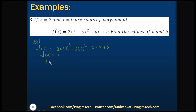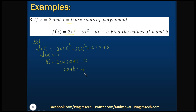So 2×8 = 16, minus 5×4 = 20, plus 2A + B = 0. That simplifies to 2A + B = 4. Let's name this as equation 1.